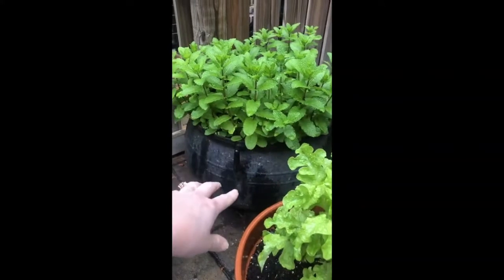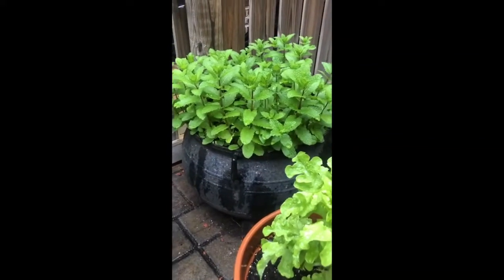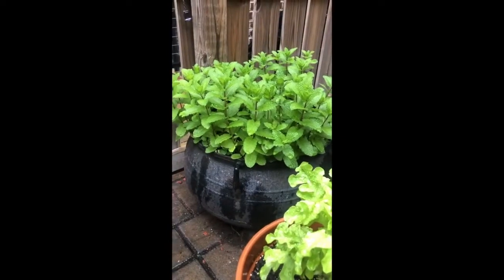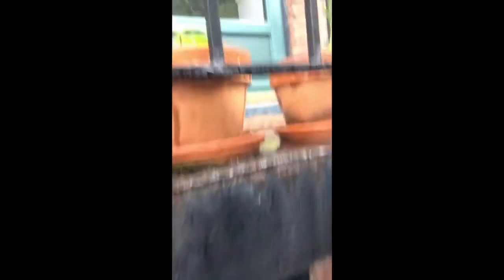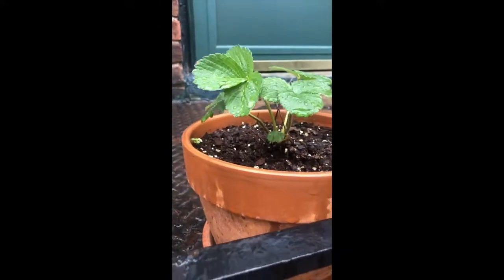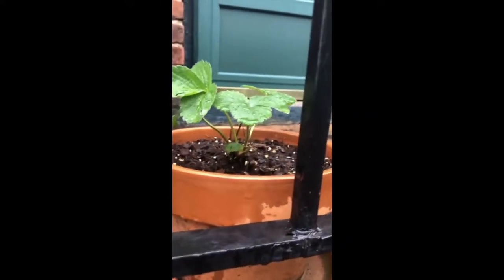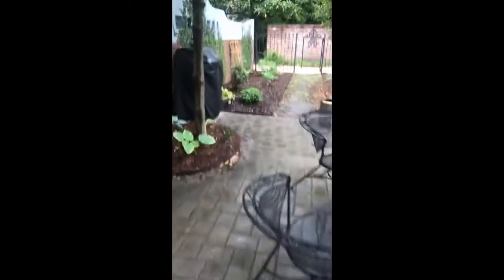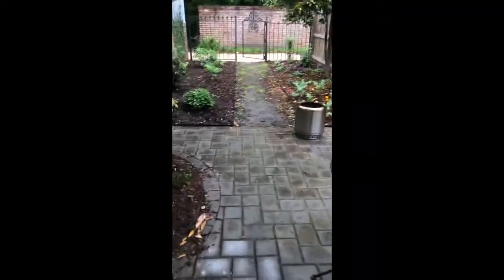And then over here I have some mint and mint is an herb that you can eat and you can use it to flavor different things. And then up here I have a strawberry plant. It doesn't have any strawberries on it yet but hopefully it will later in the summer. This is another herb. It's called a chive and chives taste like onion. You can use those when you cook.